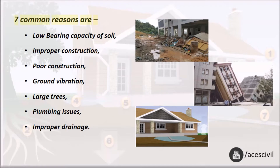Seven common reasons are: low bearing capacity of soil, improper construction, poor construction, ground vibration, large trees, plumbing issues, and improper drainage.